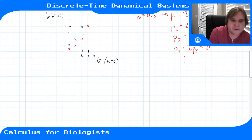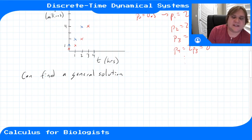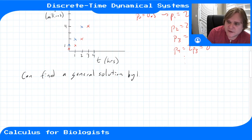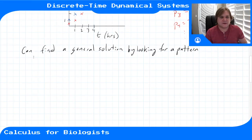We can find a general solution to this discrete time dynamical system that gives us the population at any time t, rather than stepping through every single time. When the dynamical system is simple enough, you can find the general solution just by looking for a pattern in the sequences p1, p2, and so on.